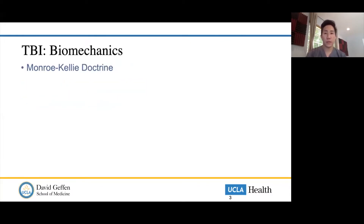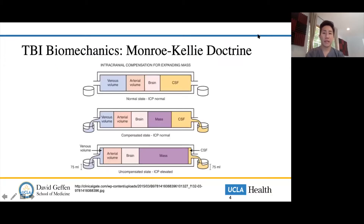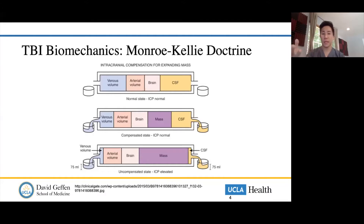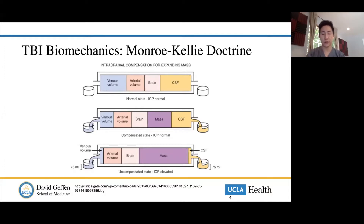One of the most important considerations when talking about ICP is the Monroe-Kelly doctrine. Essentially, the brain is housed within a fixed space — the skull. Within the brain you have the brain itself, cerebrospinal fluid, arterial blood, or venous blood. The skull being so rigid and firm, everything else either increases or decreases. Your pressure can go up if you increase the volume within the brain. The things squeezed out first would be your CSF and your venous volume, because these can change without detrimental neurologic sequelae.